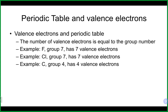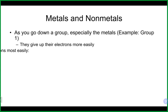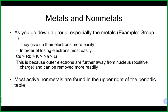The valence electrons, which are the highest energy level and furthest from the nucleus, are not held as tightly, so they are able to participate in bonding. As you go down a group, metals especially will tend to give up their electrons more easily. The most reactive metal is found in the far left and down — the bottom left corner. The most reactive non-metal is found upper right, where fluorine is.